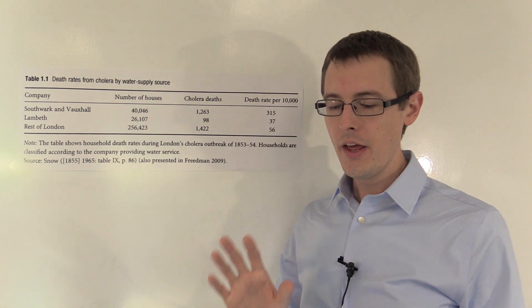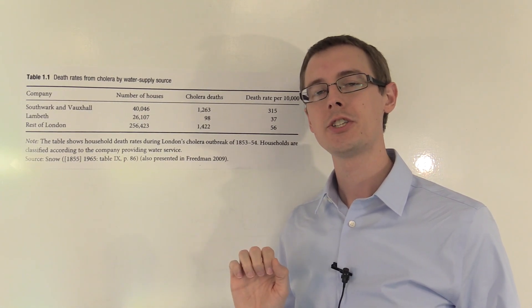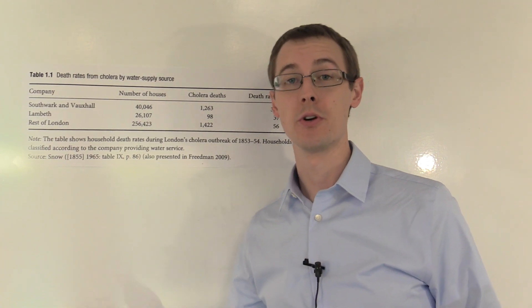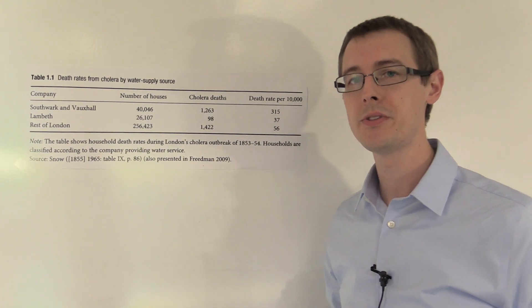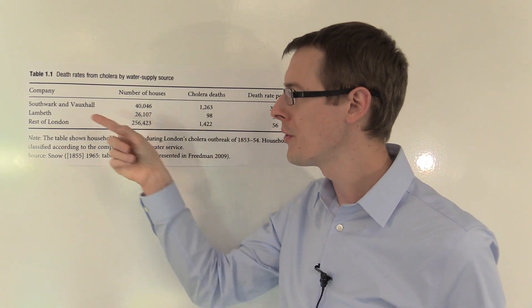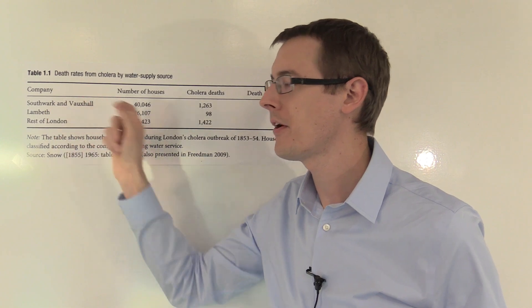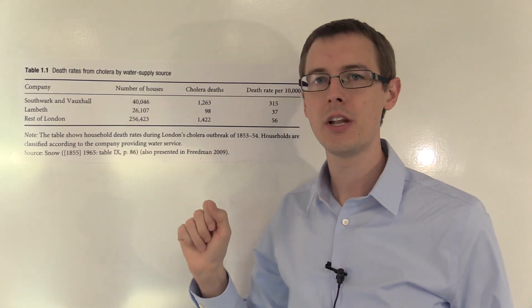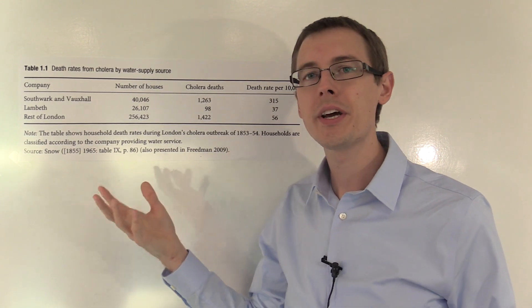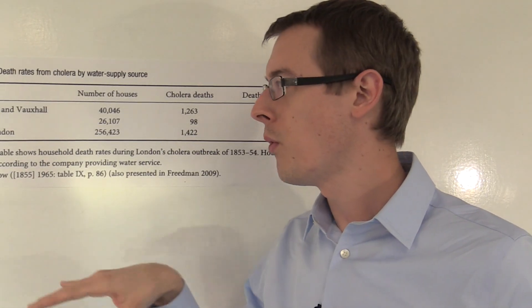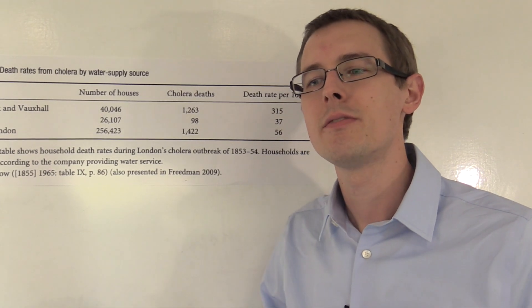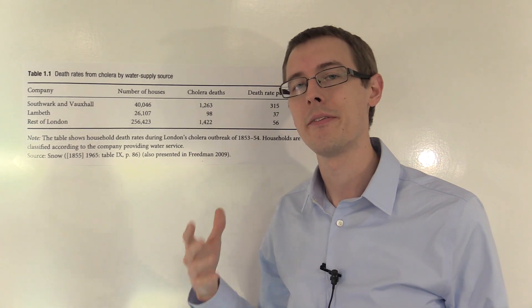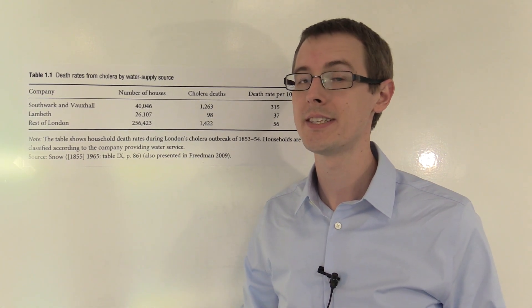Even though we've done that balance check and it looks good, we're still not guaranteed that we have balance on unobservables. For example, suppose really healthy people only chose the Lambeth company because they thought the Lambeth company was just healthier overall for some reason. Then, when cholera hits, maybe it's not the water that's causing it, it's just the fact that healthier people are more robust and they're not going to get wiped out by cholera. That would be a confounder. That would be a problem here.